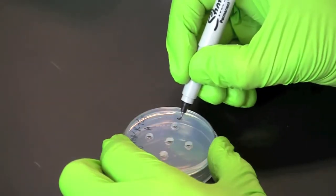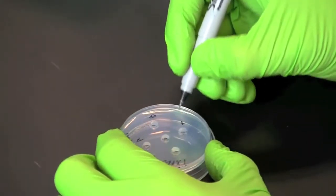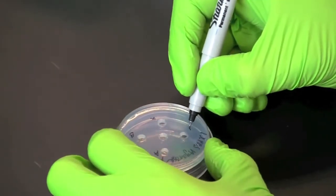Next, label the bottom of the plate for the positive and negative controls and samples A and B as shown.